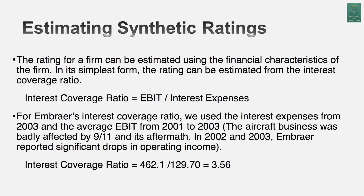Take Embraer for instance — in 2004, the interest coverage ratio comes out to 3.56 based on their operating income and interest expense. I should draw your attention to how I came up with 3.56, because it reveals something about this process. I could have used operating income from the most recent year, but that might give me a misleading view of risk. After all, when you lend to a company, you lend across times — not just in the bad times or just in the good times. So I actually used an average operating income to capture some of that stability or instability in earnings over time.